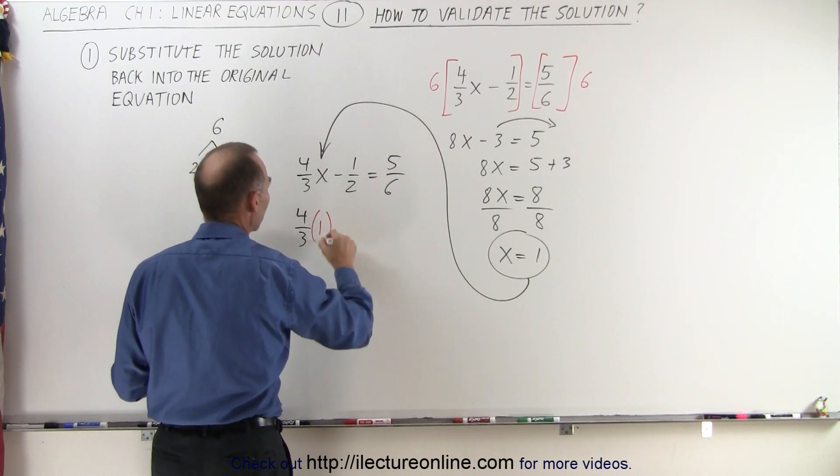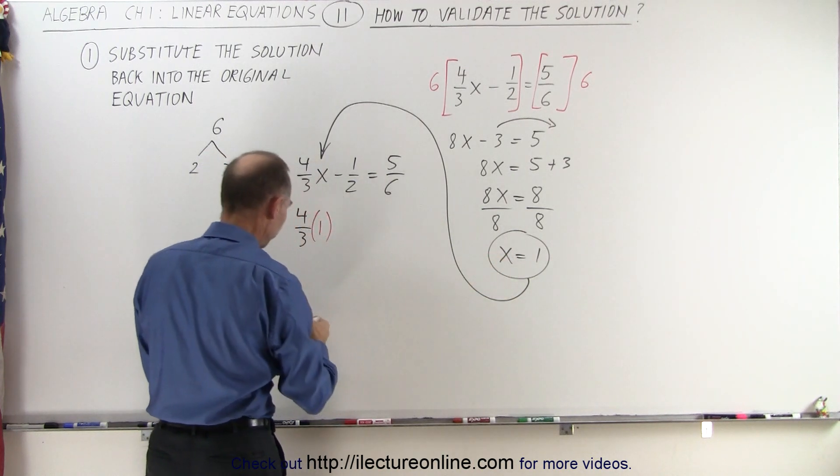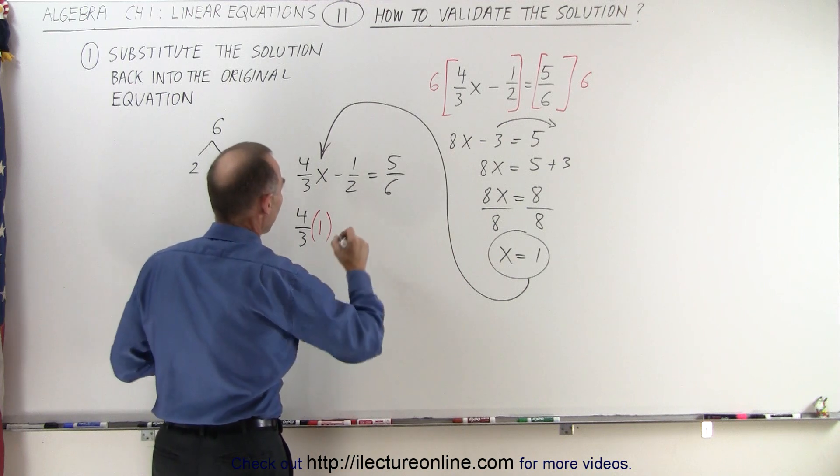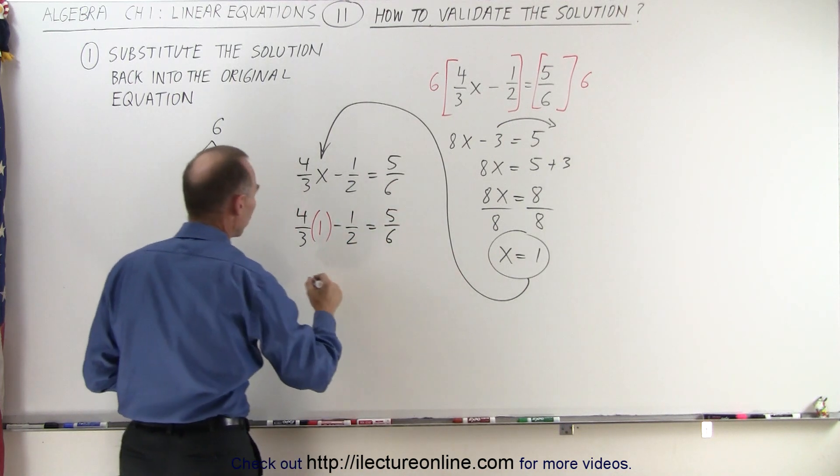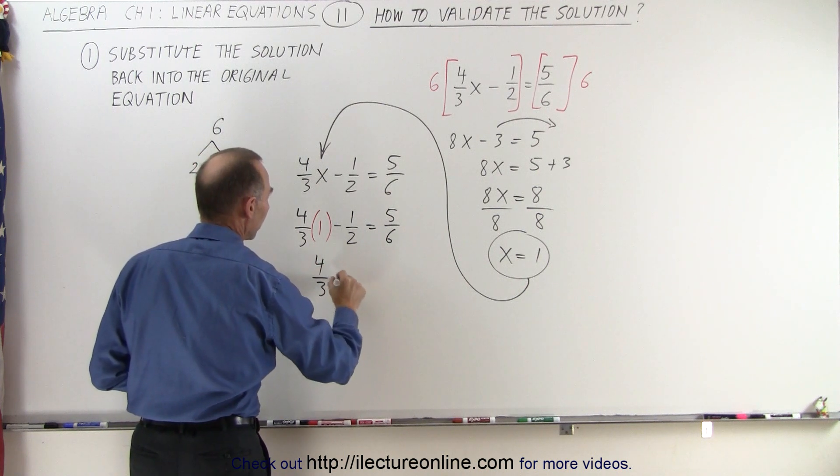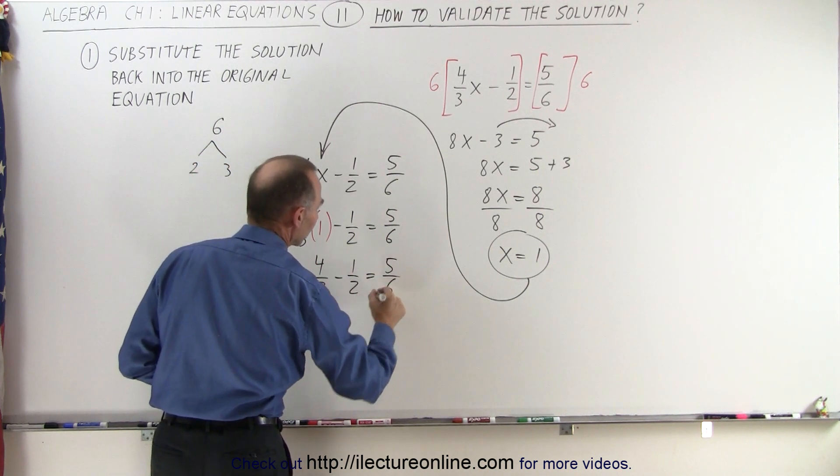Instead of x we write the number 1, because that's what x is equal to, minus 1/2 is equal to 5 over 6, or 4/3rds minus 1/2 equals 5 over 6.